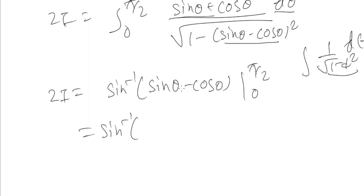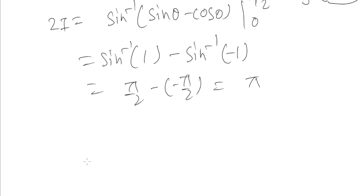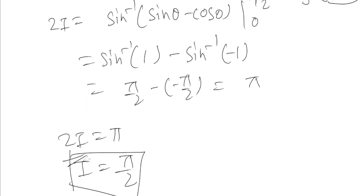Now we substitute the limits. At θ = π/2: sin(π/2) = 1, cos(π/2) = 0. At θ = 0: sin(0) = 0, cos(0) = 1, giving sin⁻¹(−1) = −π/2. So 2I equals sin⁻¹(1 − 0) − sin⁻¹(0 − 1) = π/2 − (−π/2) = π. Therefore 2I = π, and I = π/2. We get the nice answer π/2. That's how we solve it.